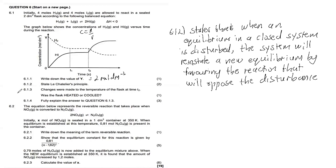6.1.3 says changes were made to the temperature of the flask at time t2 — was the flask heated or cooled? We first identify that our forward reaction is an exothermic reaction. A decrease in temperature favours the exothermic reaction and an increase in temperature favours the endothermic reaction. Looking at the graph, the concentration of the product HI is shown.